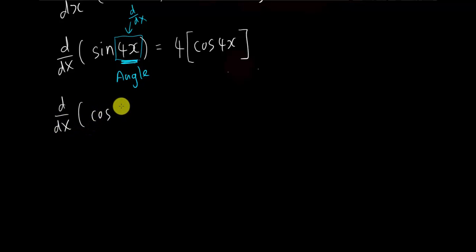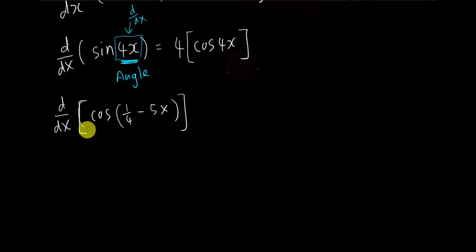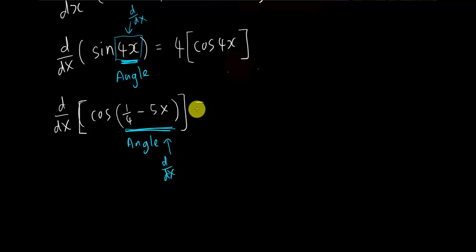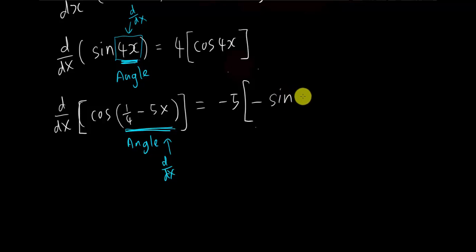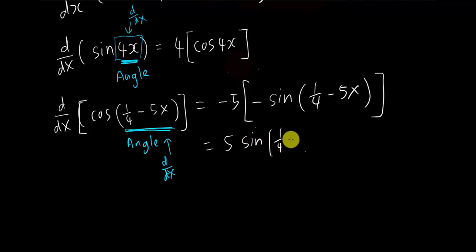Let's go to another example. If I differentiate cos(1/4 − 5x), the first thing is: this is your angle, and the angle always remains the same. You differentiate the angle: differentiating 1/4 − 5x gives you negative 5. Then differentiating cos of the angle gives you negative sin of the angle. Multiplying negative 5 by negative gives you 5sin(1/4 − 5x).